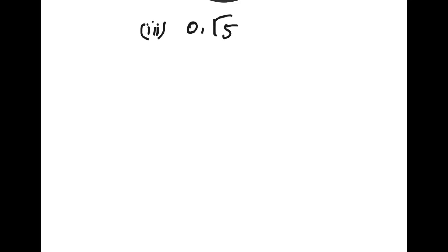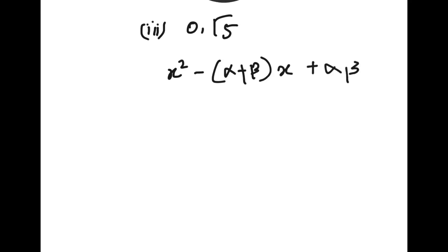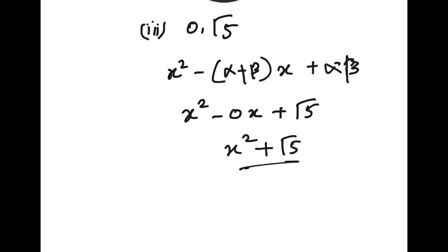The third question: the sum of zeros is 0 and the product of zeros is √5. Substituting into x² - (sum of zeros)x + (product of zeros): x² - 0·x + √5, so the 0x term vanishes and the answer is x² + √5.